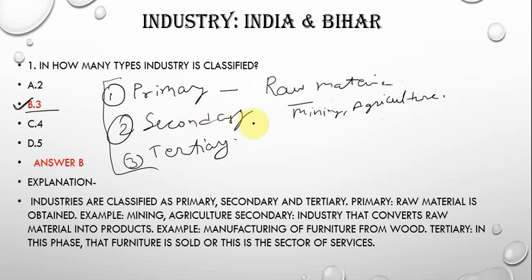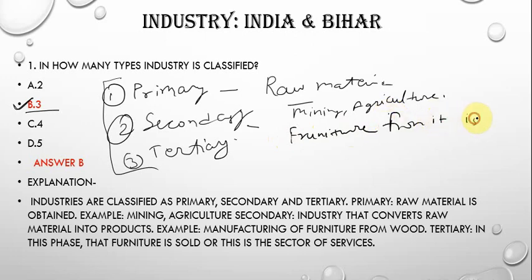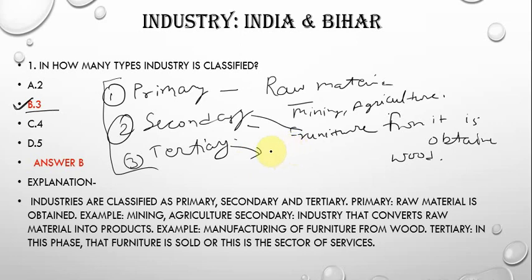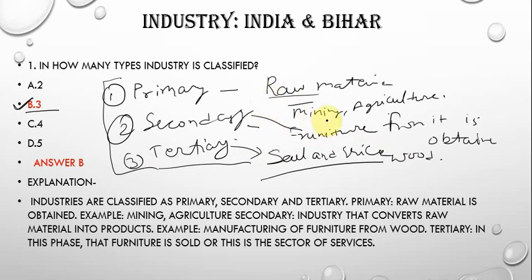Agriculture also falls under the primary sector. The second type is secondary, which converts raw material into products — for example, furniture. The third type is tertiary, which involves selling and service. So the three types are: raw material (primary), converting raw material into products (secondary), and sales and service (tertiary).